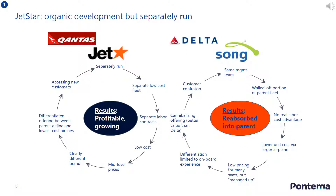Let's look at two low cost examples from the airline industry. Jetstar, the low cost airline owned by Qantas, has been successful because it was a separately run business entity with a different management team to Qantas, together with a separate low cost fleet of aeroplanes, a clearly differentiated brand that separated its offering from the parent airline, and targeting a different group of customers. The results have led to a profitable, growing airline.